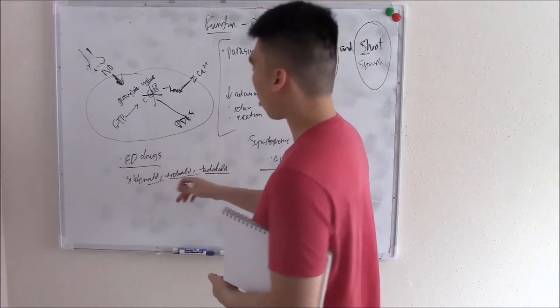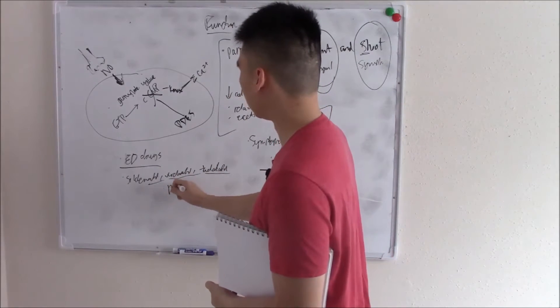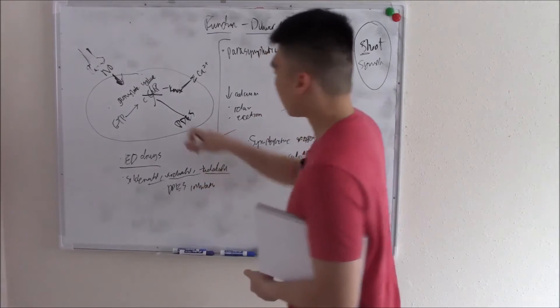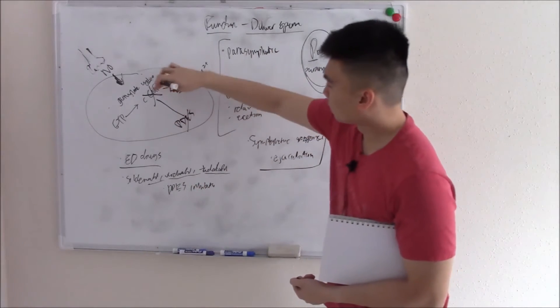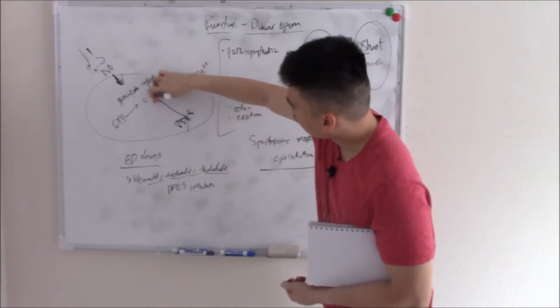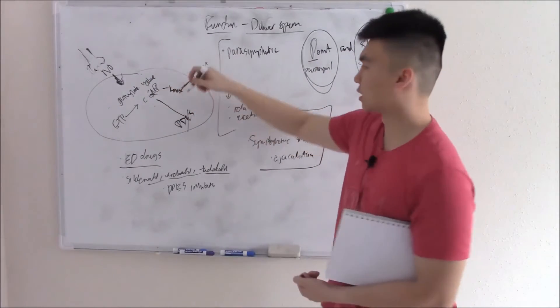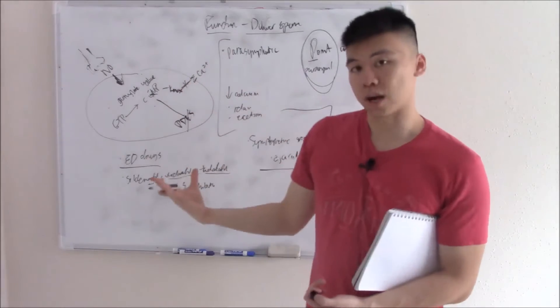These all are PDE5 inhibitors. By blocking PDE5, you keep your cyclic GMP levels high, which work on kinase, which decrease calcium and keeps your erection.